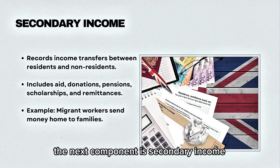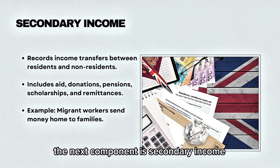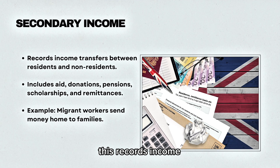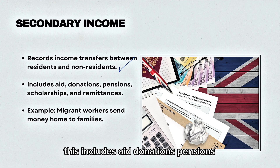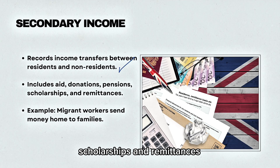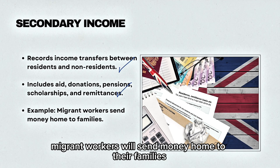The next component is secondary income. This records income transfers between residents and non-residents. This includes aid, donations, pensions, scholarships, and remittances. For example, migrant workers will send money home to their families.